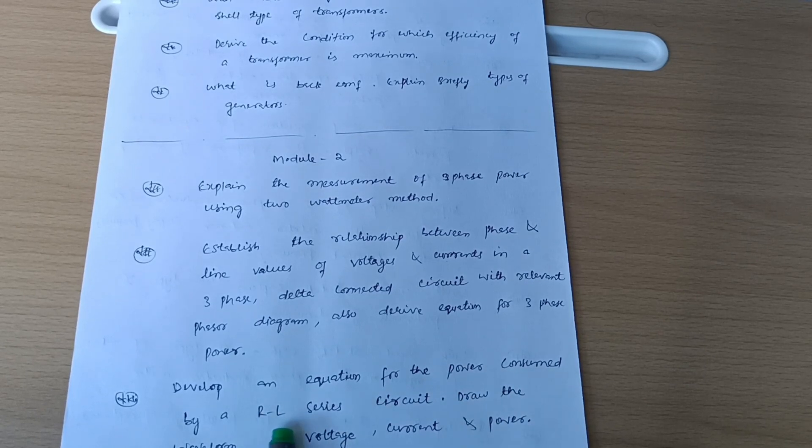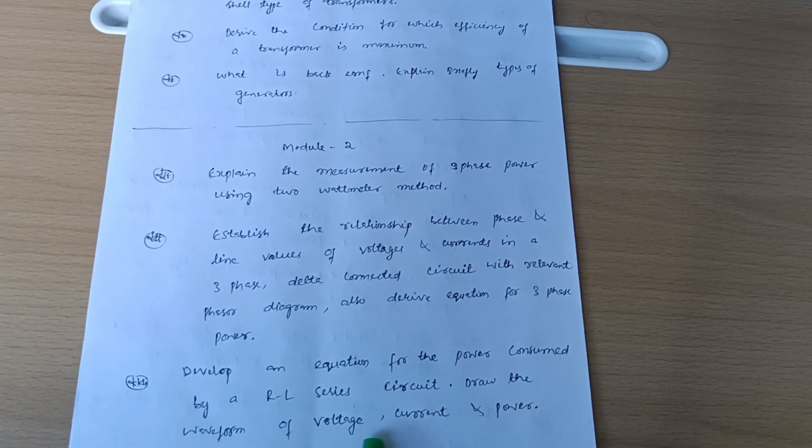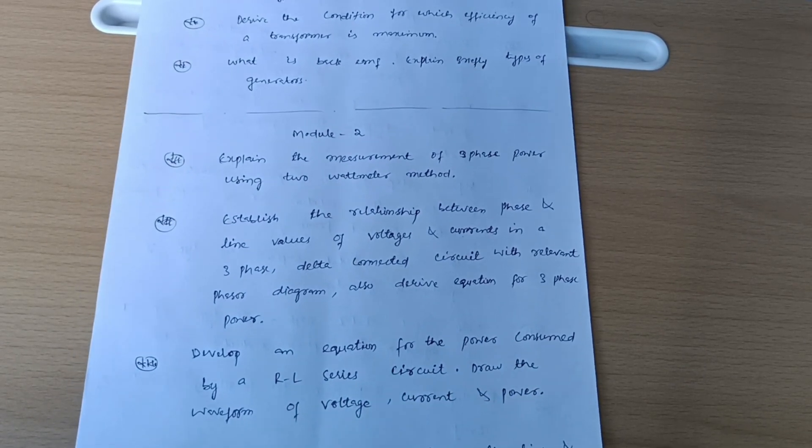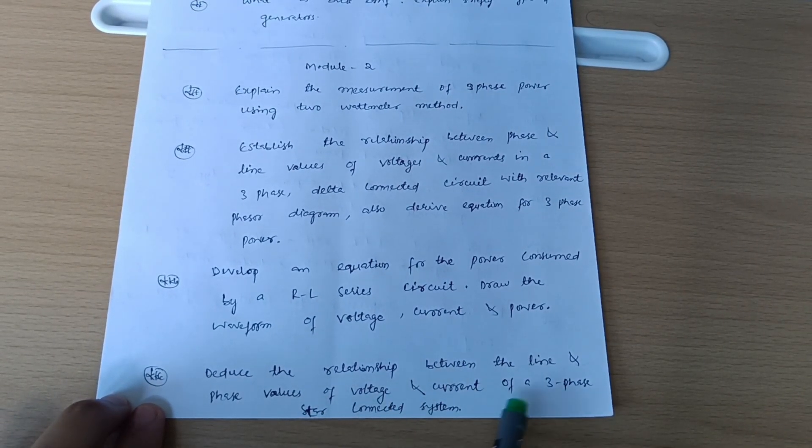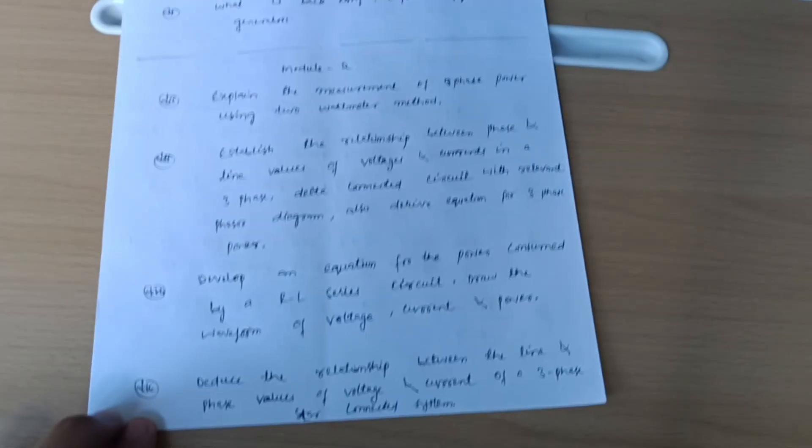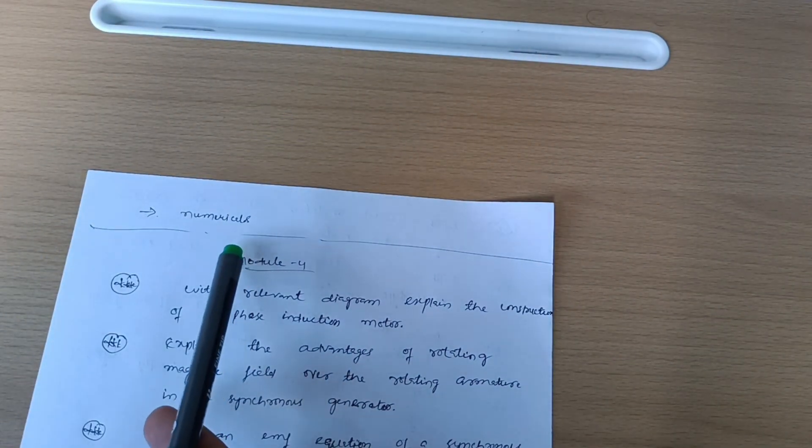Develop an equation for the power consumed by RL series circuit with waveform of voltage, current, and power. Deduce the relationship between line and phase values of voltage and current of a three-phase star connected system. Numerical: if you are convenient, go through the numerical part, otherwise you can leave it.